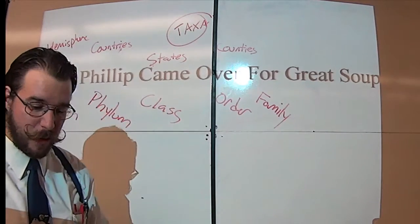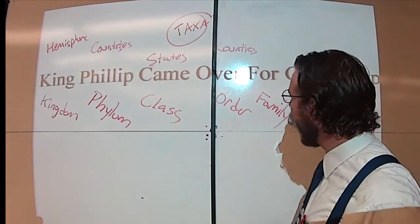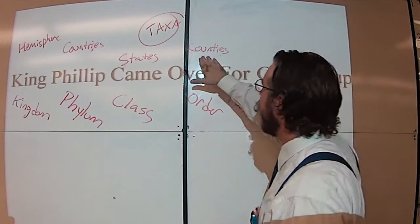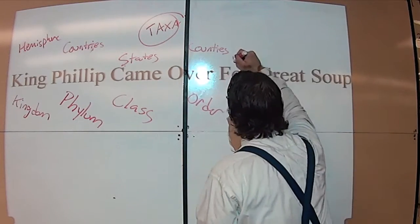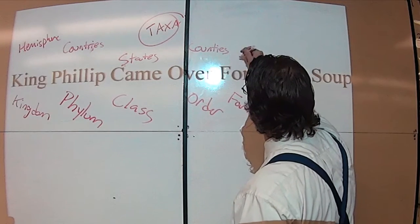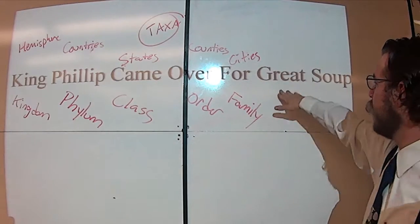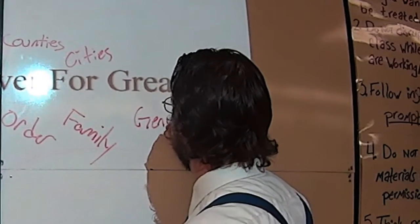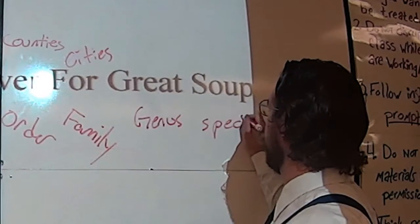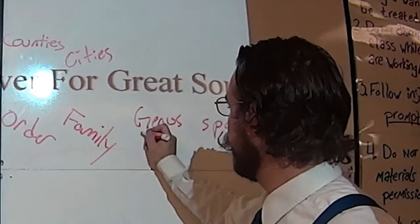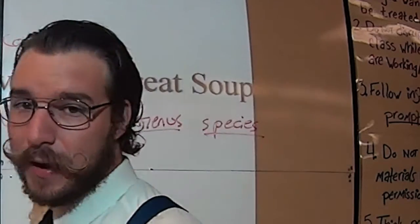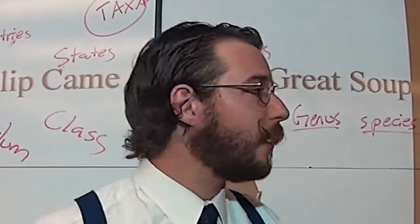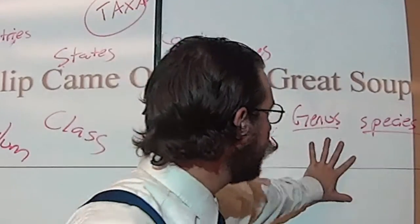'F' is for family — every order can be broken down into different families, just like every county can be broken down into different townships or cities. The 'G' here is for genus and the 'S' is for species. Capitalization is very important: genus is capitalized, species is not, and both must be underlined — or in italics if printed. Underlining was invented because there are no italics for handwriting.